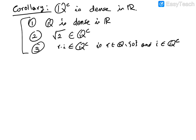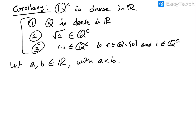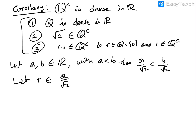So let's let a and b be in ℝ with a less than b. Let R be a rational number. If a is less than b, then a over square root of 2 is less than b over square root of 2, because 1 over square root of 2 is positive. So let's find an R between a over square root of 2 and b over square root of 2.